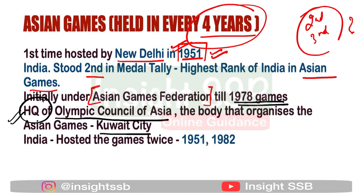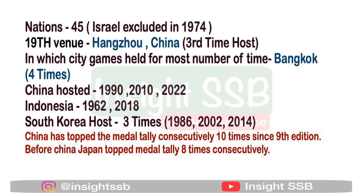The Asian Games were organized by the Asian Game Federation until 1978, but now they are conducted by the Olympic Council of Asia. The headquarters of the Olympic Council of Asia is in Kuwait City — very important. India has hosted the Asian Games twice: first in 1951 and again in 1982. A total of 45 nations participate in the Asian Games. Israel was excluded in 1974.